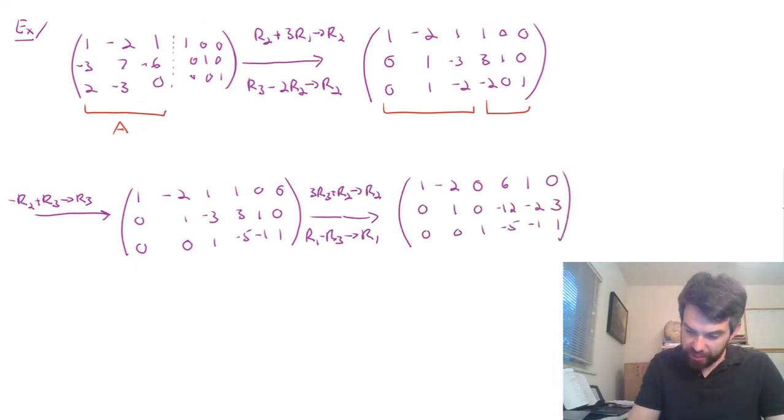Notice, by the way, that at this step, I'm going further than just doing it into REF form, because I wanted to have the zeroes above it. I'm going all the way to the reduced row echelon form. So, I'm going a little bit further than sometimes we might do. One step left.